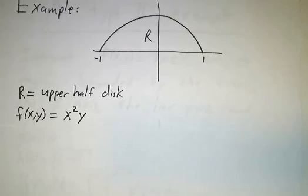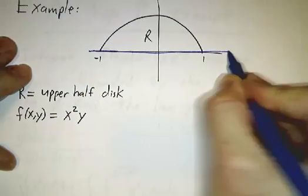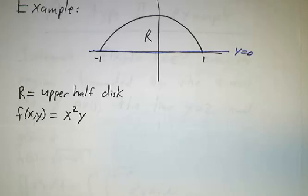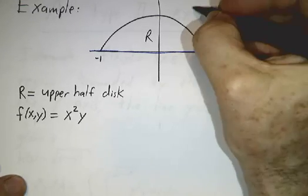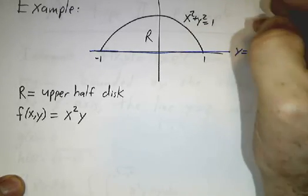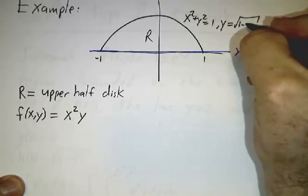So this is actually a type 1 region. See, the bottom of the region is the line y equals 0, that's the x-axis. The top of the region is the top half of the circle, and the circle we know is x squared plus y squared equals 1.